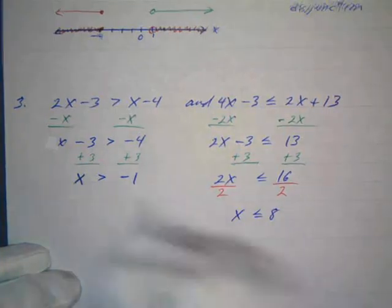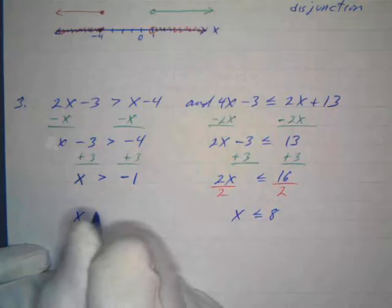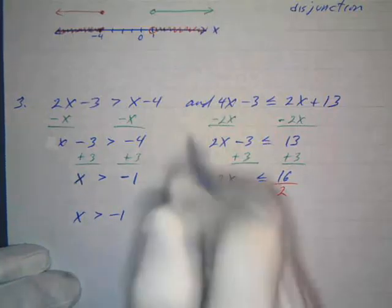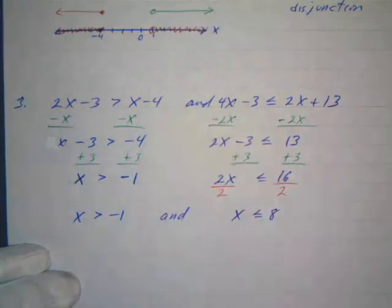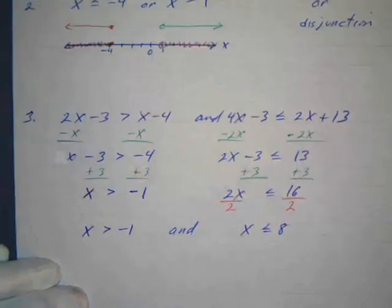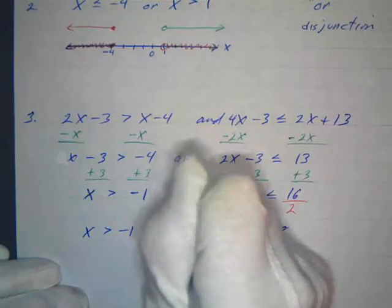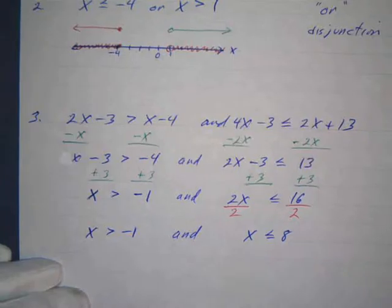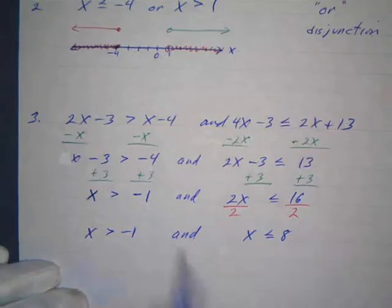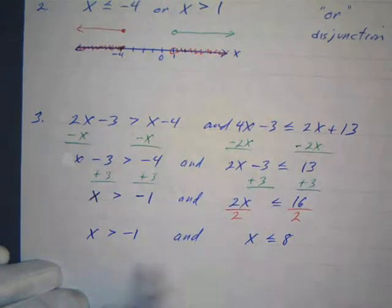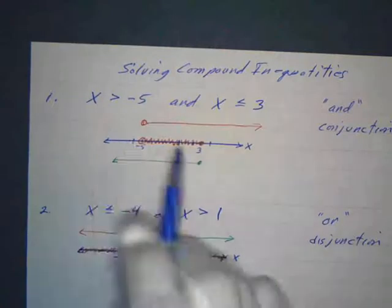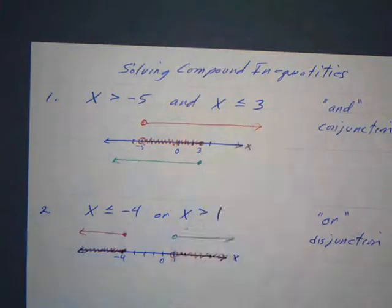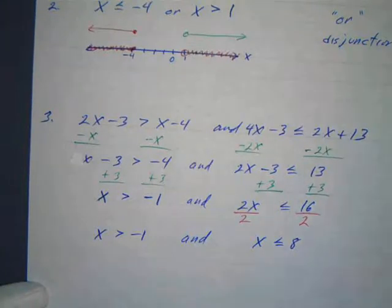So our two simplified inequalities joined by 'and' are: x is greater than negative one AND x is less than or equal to 8. This is similar to example one. We draw our number line and label the key points.